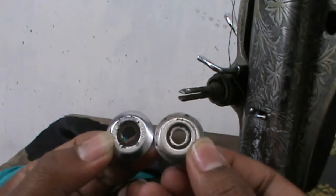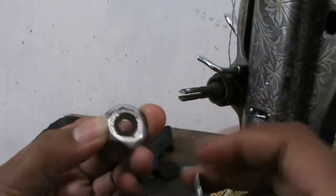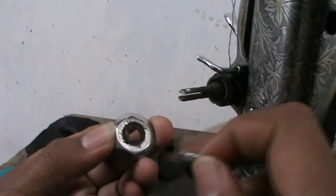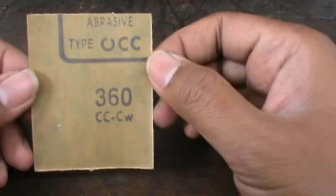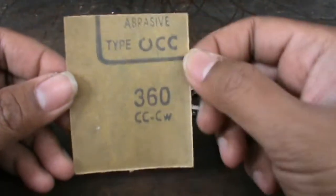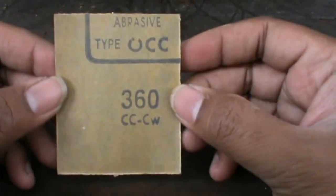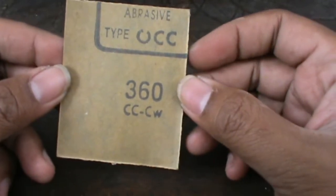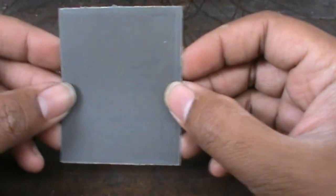Cara untuk mengatasi masalah ini, permukaan kecarnya ini harus diratakan, bisa menggunakan amplas atau batu pengasah atau gerinda. Yang biasa saya lakukan adalah dengan menggunakan amplas. Jadi ini adalah amplas yang saya gunakan, 360 grit untuk mengamplas besi.